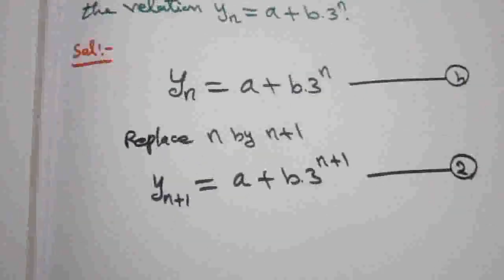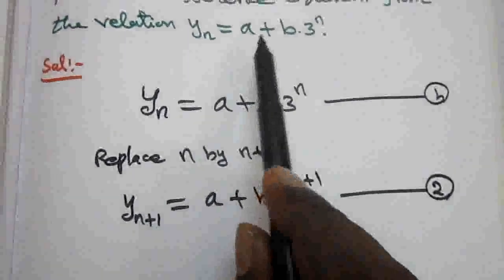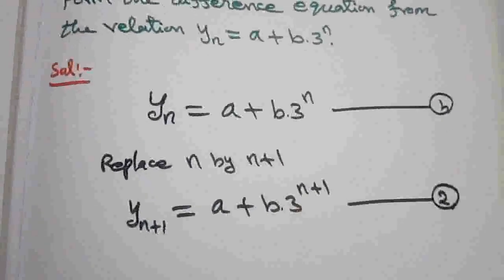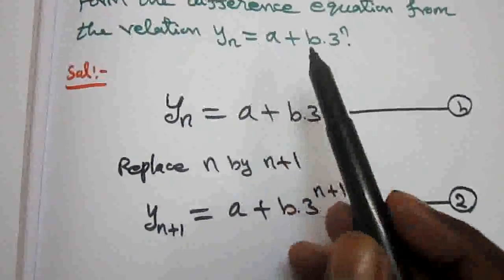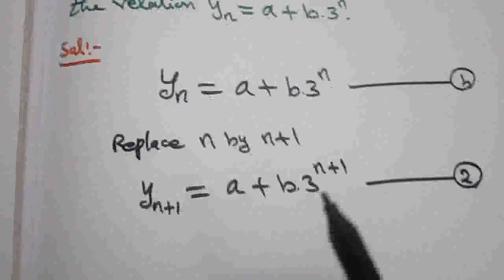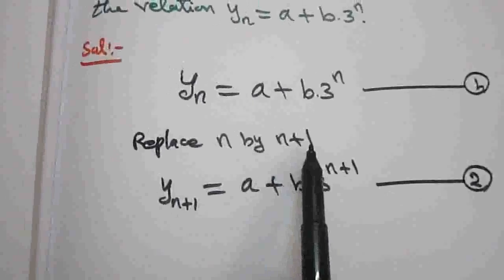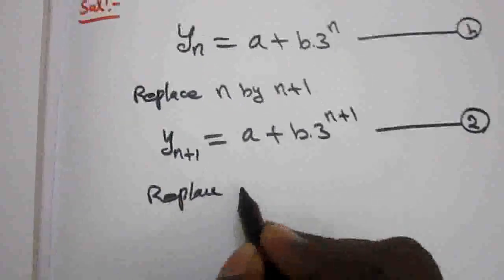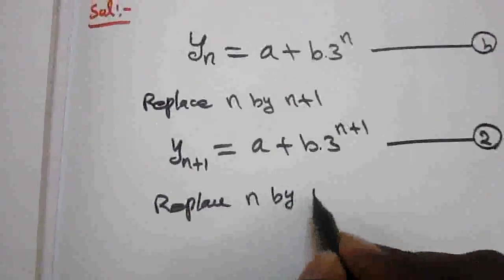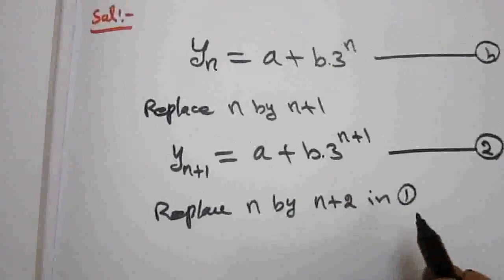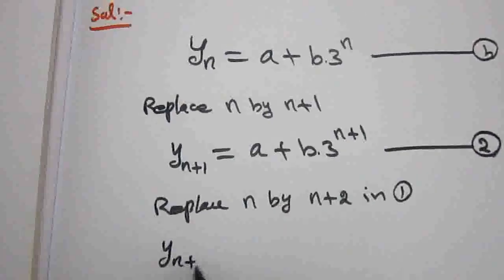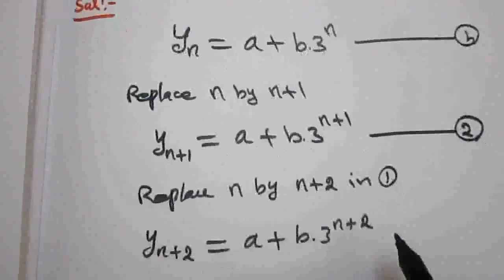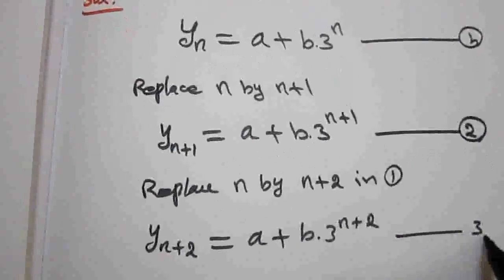Here I want three equations because to eliminate two arbitrary constants I want three equations. If it is only one arbitrary constant, two equations are enough. But here there are two arbitrary constants so I want three equations. So again I am going to replace n by n plus 2 in equation number 1, so that y(n+2) equal to a plus b into 3 power n plus 2. This is equation number 3.